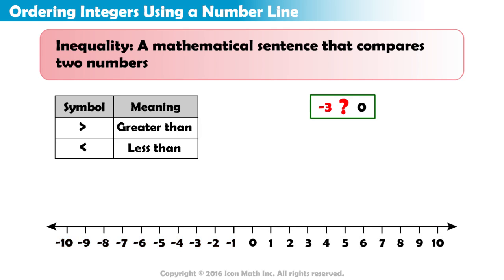Where is negative 3 located on the number line? Negative 3 is located three places to the left of 0.